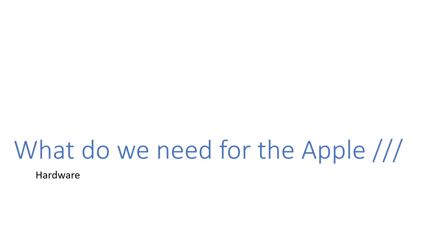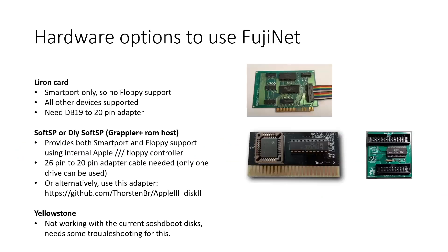For hardware to use FujiNet on the Apple 3, we have two options: a Liron card giving SmartPort only, or we can use soft SP — including a DIY version I have on a Grappler Plus — which gives SmartPort and floppy support using the internal Apple 3 floppy controller. There's also a nice adapter available on GitHub. Yellowstone has some issue with the SOS HD boot, so that's to be worked on.